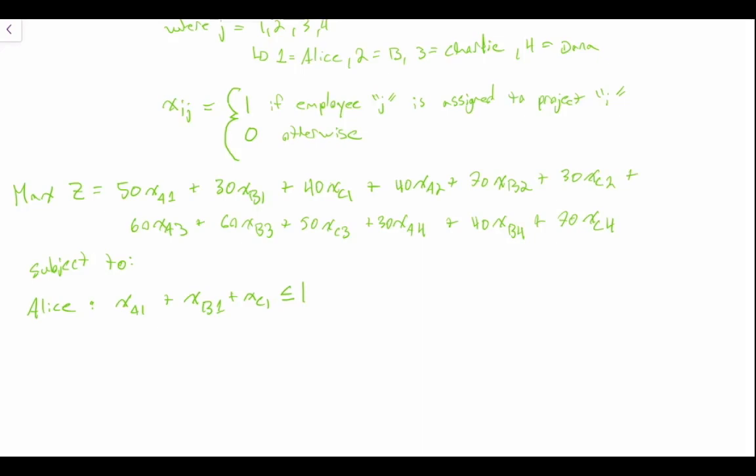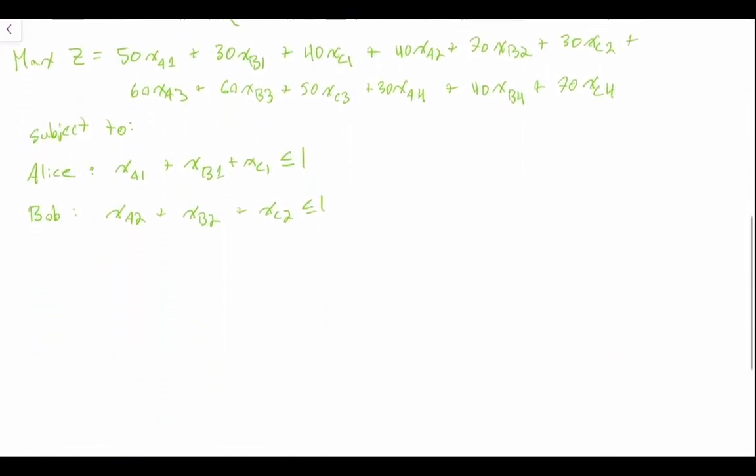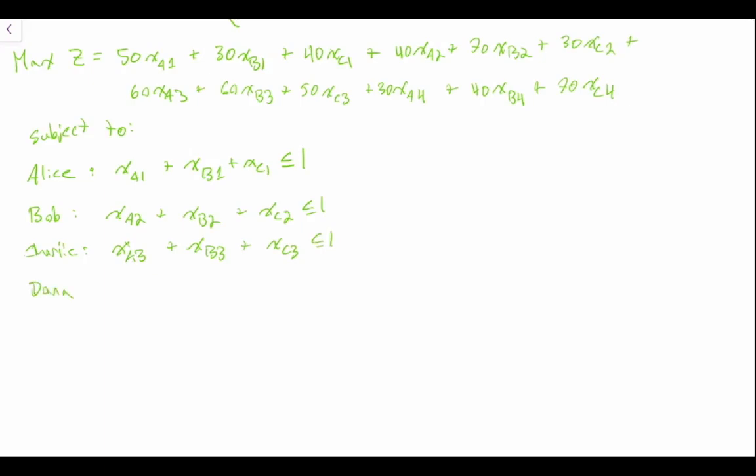We can do the same thing for Bob, which is XA2 plus XB2 plus XC2 less than or equal to one. We have Charlie next, so XA3 plus XB3 plus XC3 less than or equal to one. And Dana, XA4 plus XB4 plus XC4 less than or equal to one.